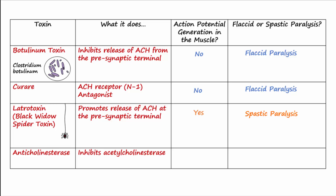Acetylcholinesterase inhibitors, also known as anticholinesterases, inhibit the action of acetylcholinesterase. Examples of anticholinesterases include organophosphates used in certain pesticide preparations. Acetylcholinesterase normally acts to break down acetylcholine in the synaptic cleft. Anticholinesterases inhibit acetylcholinesterase, causing acetylcholine levels in the synaptic cleft to rise, resulting in increased frequency of action potentials in the muscle and leading to spastic paralysis.